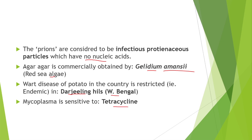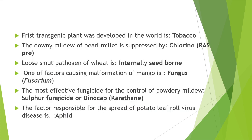The first transgenic plant developed in the world was tobacco, and the first commercial transgenic plant is cotton. Downy mildew of pearl millet is suppressed by the application of chlorine.